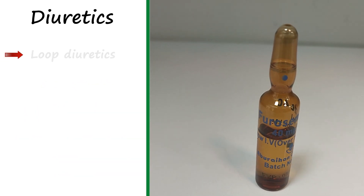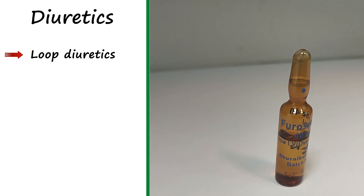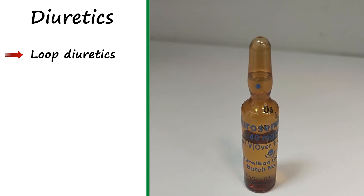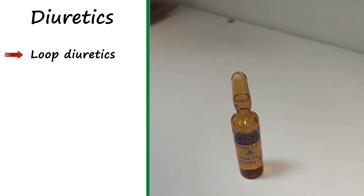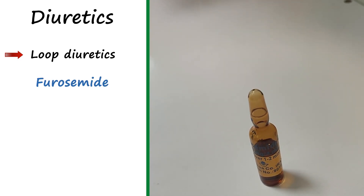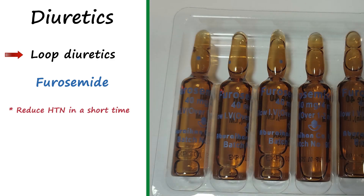The second class are loop diuretics. The word loop refers to the loop of Henle, the segment where they exert their effect. The prototype in this class is furosemide. Loop diuretics have a significant effect of reducing blood pressure in a short time. In the state of edema, they excrete extra body fluid rapidly. At the same time, they do not waste potassium like carbonic anhydrase inhibitors.